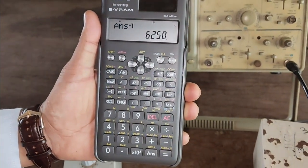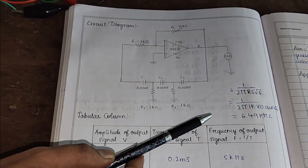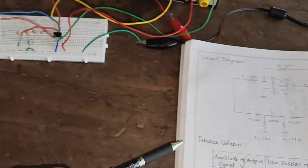That means we are approximately getting the designed frequency as we have shown in this formula. In this way we conduct RC phase shift oscillator.